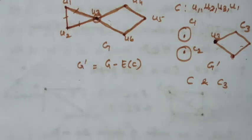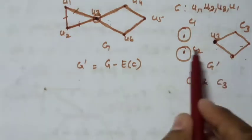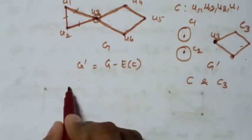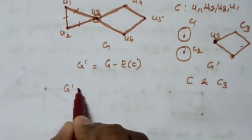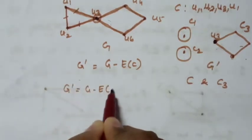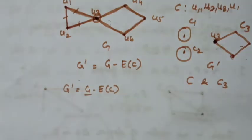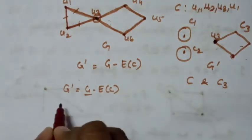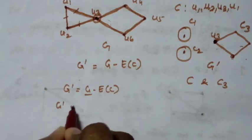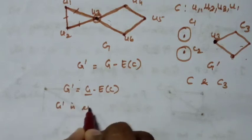Let G' = G minus E(C). Since G is even — meaning there is no vertex of odd degree — G' is also even.